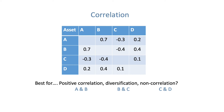For diversification, follow the same technique but look for the biggest negative number. That would be minus 0.4. Moving horizontally and vertically from minus 0.4 shows that assets B and C have the biggest negative correlation at minus 0.4. So you combine B and C for diversification.